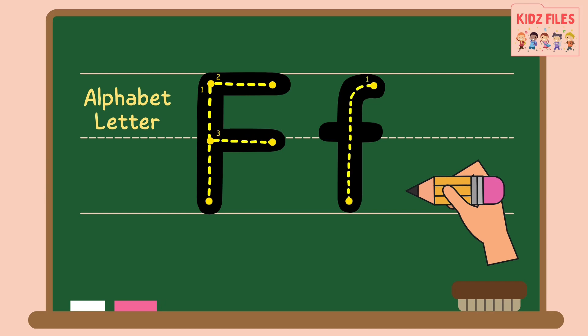Now we are going to go to the lowercase F. Start from the top, and make a little curve down, and go to the middle, and go straight across.